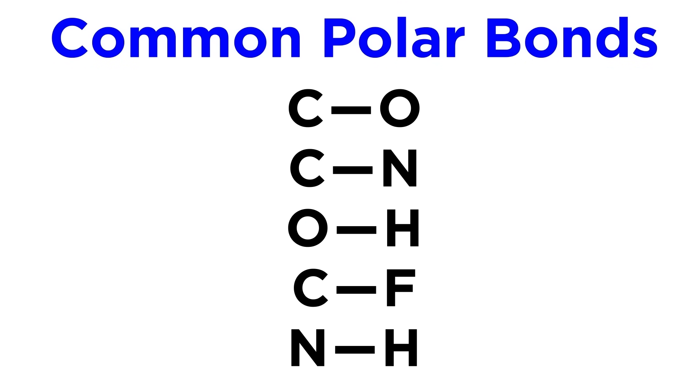In organic chemistry, there are a number of polar covalent bonds that we will see over and over again. Carbon-oxygen bonds, carbon-nitrogen bonds, and oxygen-hydrogen bonds are the most common, but carbon-fluorine bonds, nitrogen-hydrogen bonds, and a few others will also be important.